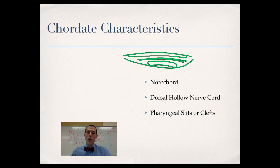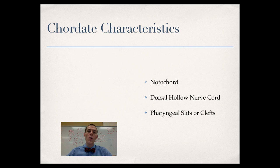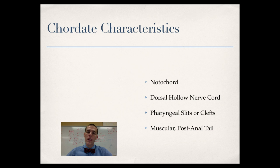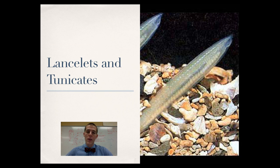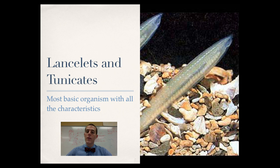Next, chordates have pharyngeal slits or clefts. At some point in development, slits appear in the embryo — in some organisms these become gills, in others they develop into bones of the ears. All chordates show this at some point. They also have a muscular post-anal tail, which has disappeared in organisms like humans but is present in most other chordates. The most basic chordates are the lancelet and the tunicate.